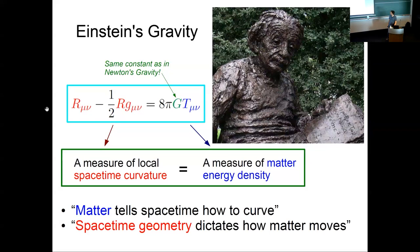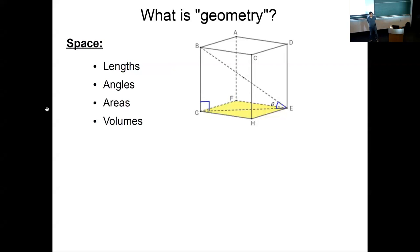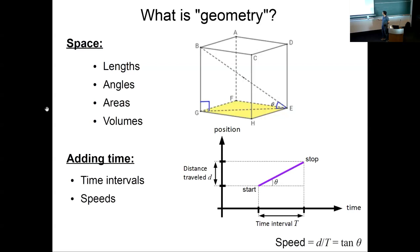I want to demystify this a little bit. When I say space-time geometry, I do mean some things that you normally associate with geometry. Length, angles, areas, volumes are associated with geometry of space. And if you've ever drawn a position versus time graph, you've done a little bit of space-time geometry. In addition, you add time intervals, angles on a position versus time graph corresponds with speeds. And then there are, of course, some slightly more generalized objects.